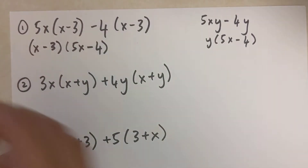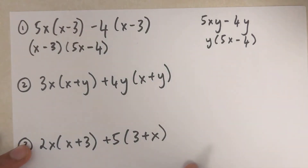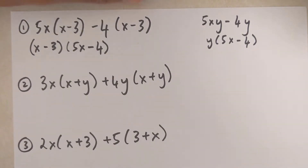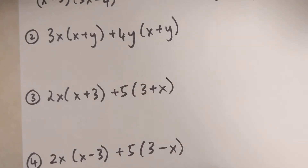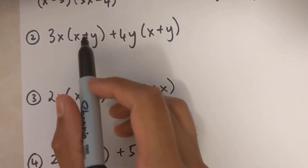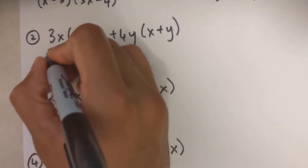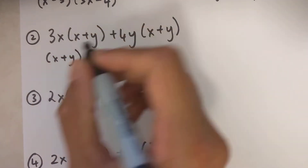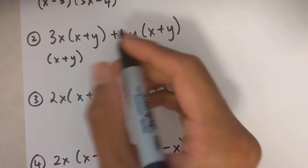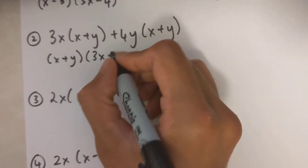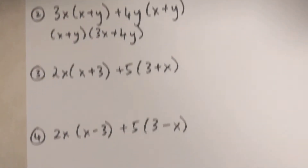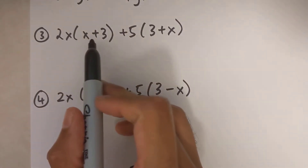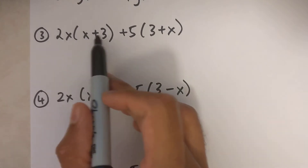That's the explanation of how you factor out a bracket, and that's what we're going to apply to learn factoring by grouping. Looking at the next couple of questions: this one I can factor out x plus y and I'm left with 3x plus 4y.